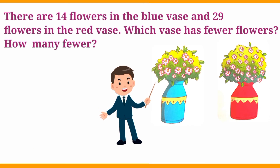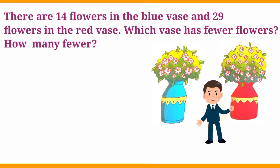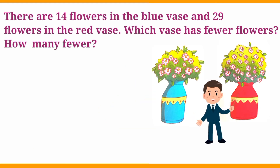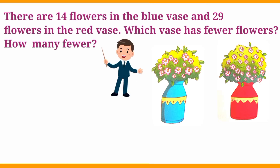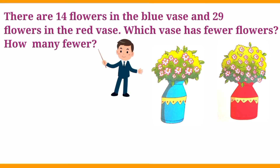There are 14 flowers in the blue vase and 29 flowers in the red vase. Which vase has fewer flowers? How many fewer?